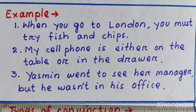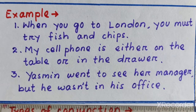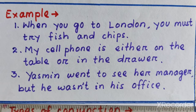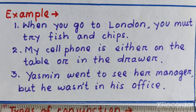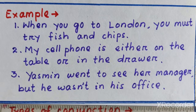And number three: 'Jasmine went to see her manager but he wasn't in his office.' The conjunction is 'but' and it connects two clauses. 'Jasmine went to see her manager' is the first clause, and 'he wasn't in his office' is the second clause.